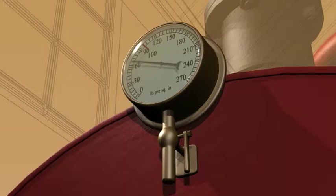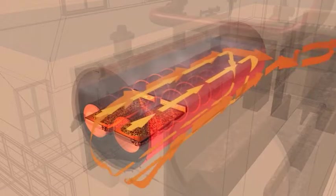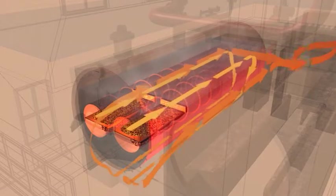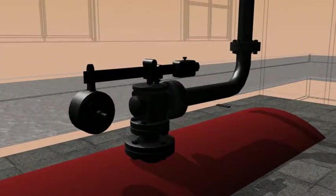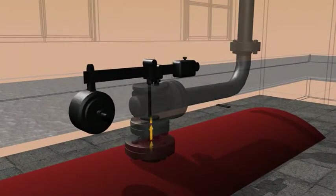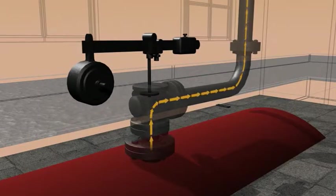The steam being generated is under pressure and this is adjusted by controlling the dampers and the level of the fire. Pressure must be controlled and there are safety release valves on top of the boiler which are pushed open by the steam if the pressure gets too high.